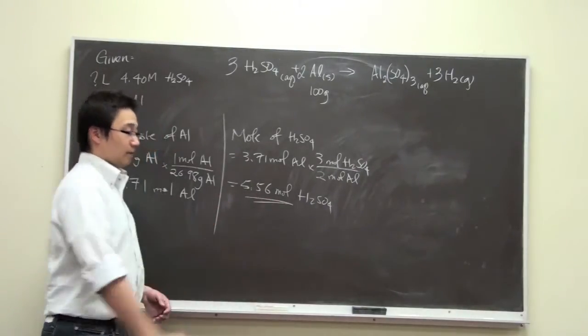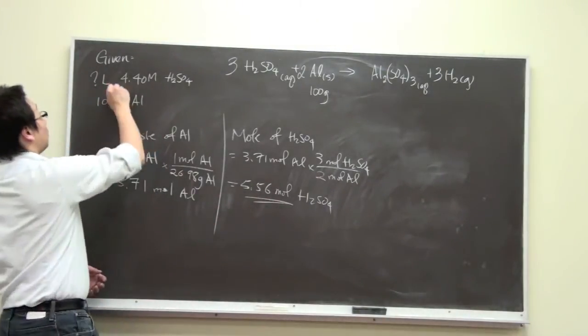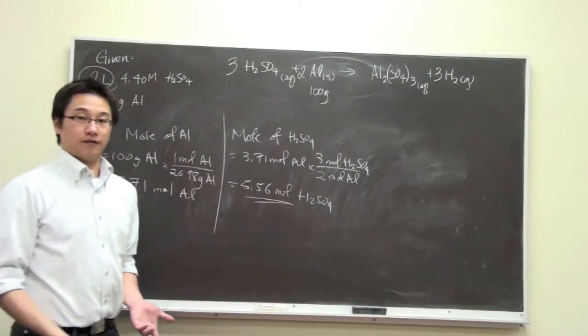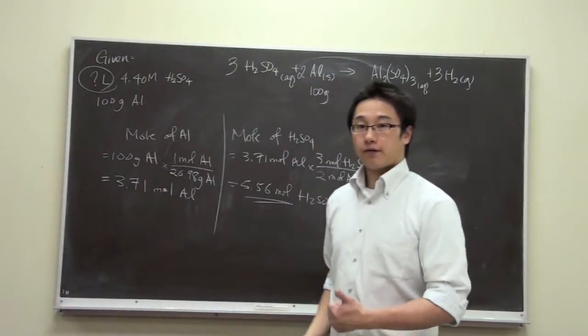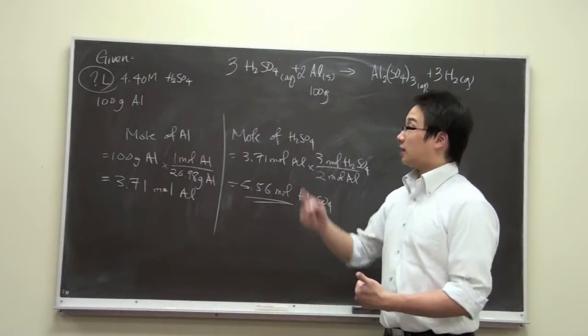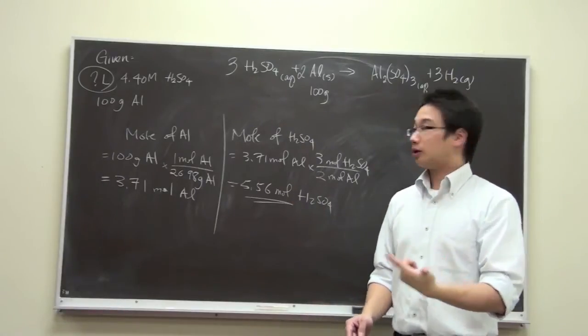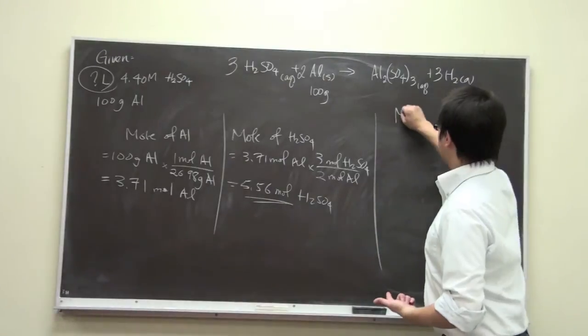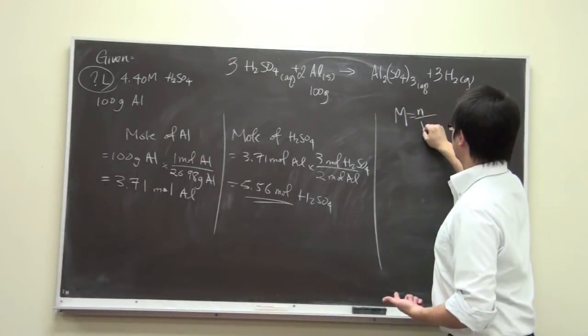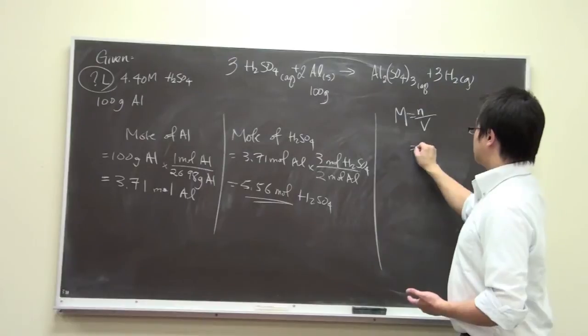This is a very important piece of information, because in order to find out the volume of the sulfuric acid, since it's a solution, we have to have molarity and the number of moles. So now we can make use of this formula and rearrange it.